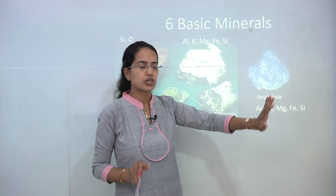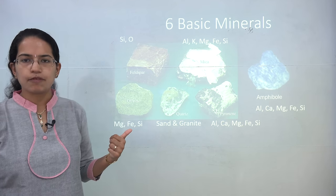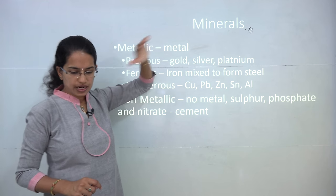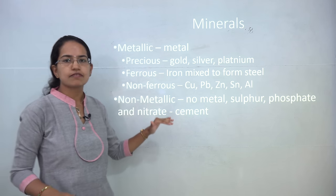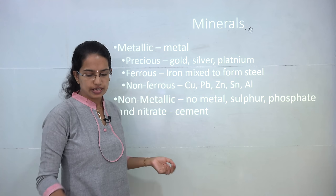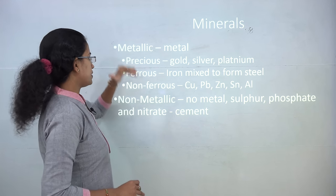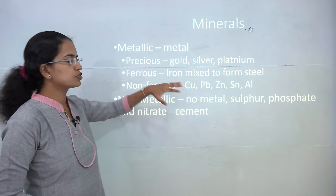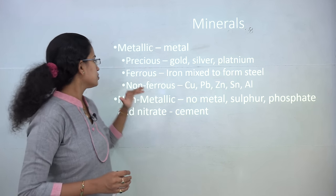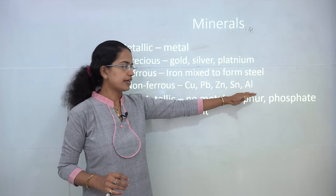Finally, you have amphiboles, which are again black or green in color. Calcium, aluminum, magnesium, iron, and silicon are their main constituents, and a common example is hornblende. It is mainly used in the asbestos industry. When we classify minerals, they can be classified into two types: metallic and non-metallic. Non-metallic minerals do not contain any metal, such as sulfur, phosphates, and nitrates — cement is an example. Metallic minerals include metal and can be further classified as precious (gold, silver, platinum), ferrous (iron and steel), and non-ferrous (copper, lead, zinc, tin, and aluminum).